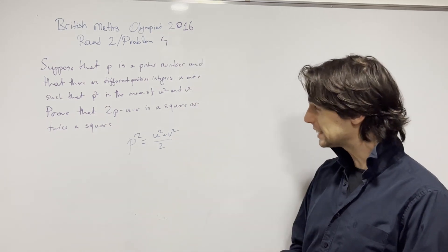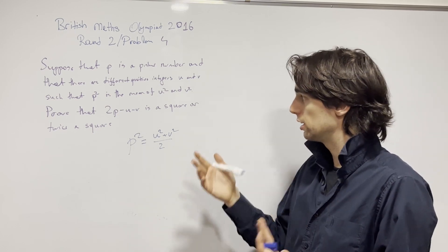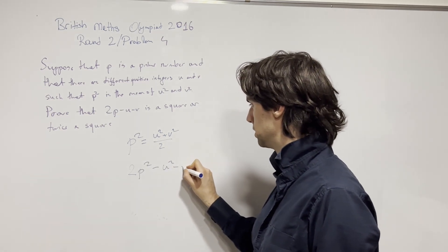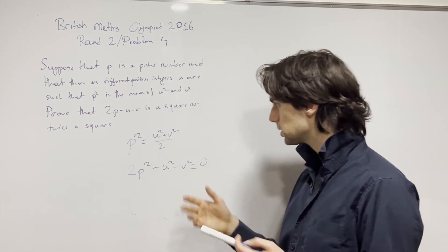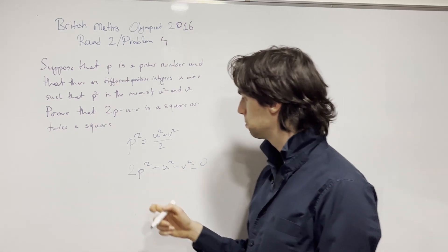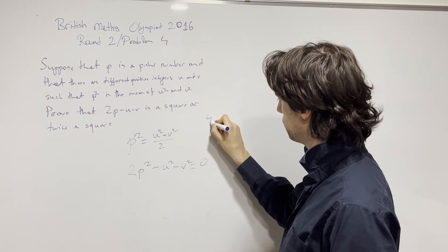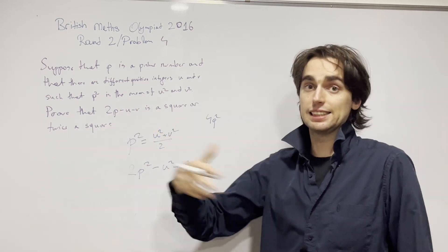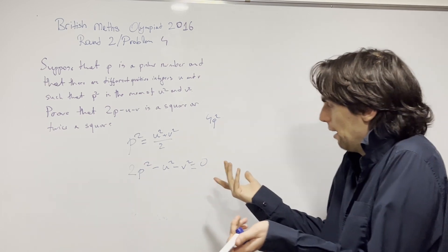This is a bit of a challenge — how do I get 2p minus u minus v? Let's force it. We have 2p² minus u² minus v² equals zero. My thinking is to multiply everything by 2, giving 4p². This only makes sense to me as a difference of squares — that's the only way I can see how to get 2p minus u minus v.